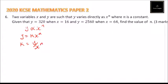Now with that, we use the values that we have here. K is equal to, we are told that y is 320 and x is 16, so it is 320 divided by 16 to power n. And we can also say k is equal to 2560 divided by 64 to power n.